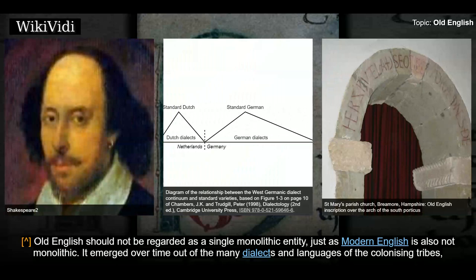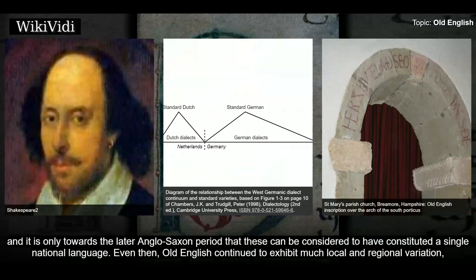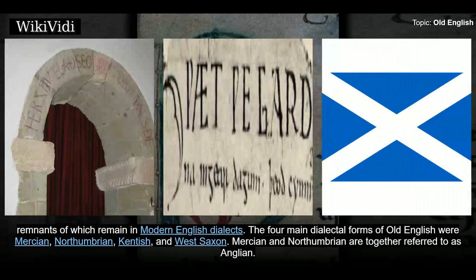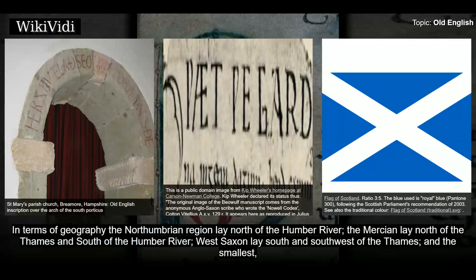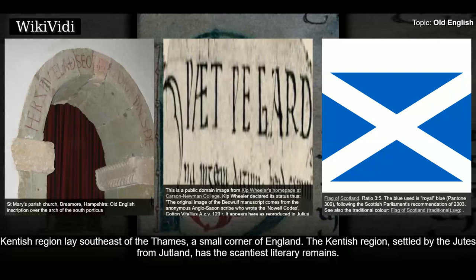Old English should not be regarded as a single monolithic entity, just as Modern English is also not monolithic. It emerged over time out of the many dialects and languages of the colonizing tribes, and it is only towards the later Anglo-Saxon period that these can be considered to have constituted a single national language. Old English continued to exhibit much local and regional variation, remnants of which remain in Modern English dialects. The four main dialectal forms were Mercian, Northumbrian, Kentish, and West Saxon. Mercian and Northumbrian are together referred to as Anglian. Northumbria lay north of the Humber River, Mercia lay north of the Thames and south of the Humber, West Saxon lay south and southwest of the Thames, and the smallest, Kentish region, lay southeast of the Thames.